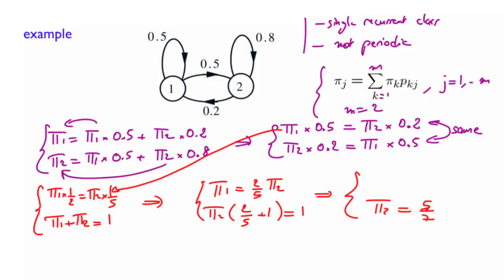And then we use that, replace it here. And we end up with pi 1 equals 2 fifth times 5 over 7 equals 2 over 7. And we check 5 plus 2 equals 7. So these are real probabilities.